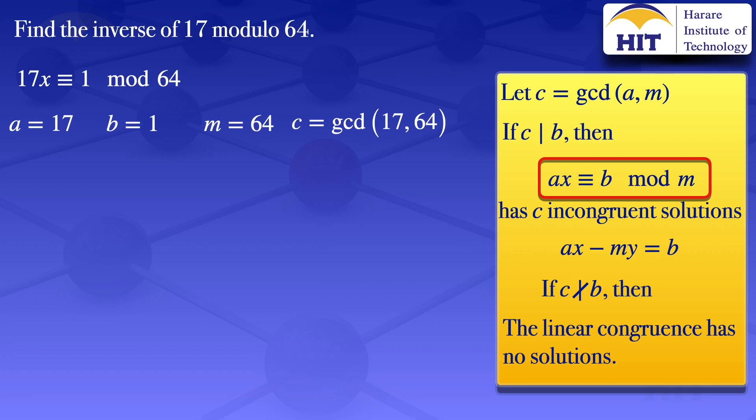17 is a prime number, so the greatest common divisor of 17 and 64 should give us 1. But in this case, I will use the Euclidean algorithm to get that greatest common divisor, just because we need to use back substitution to solve that linear congruence.